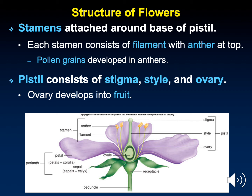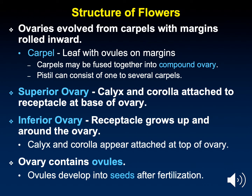The female part, the pistil, consists of three parts: the stigma, the top part where pollen lands; the style, the long tube that connects it to the ovary at the base; and inside the ovary is the ovule. The ovary is what develops into fruit once the plant has been fertilized. Ovaries evolved from carpels, which again are modified leaves.